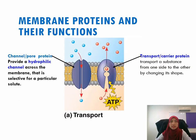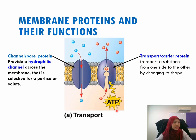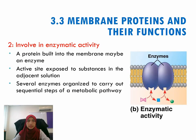For the left example, a protein that spans the membrane may provide a hydrophilic channel across the membrane with selectivity for a particular solute. For the right example, other transport proteins shuttle a substance from one side to the other by changing shape — for example, carrier proteins such as those for glucose. ATP is hydrolyzed as an energy source to actively pump the substrate.